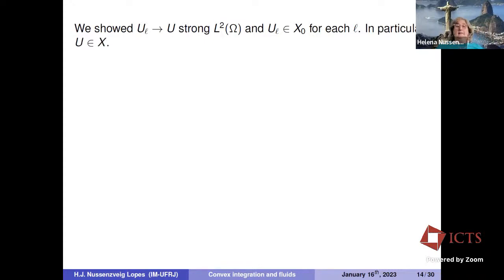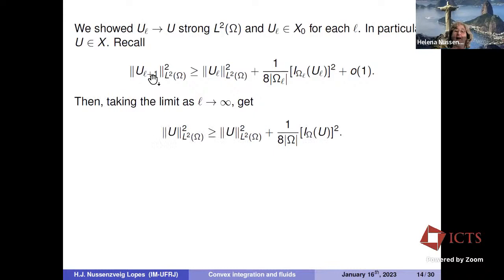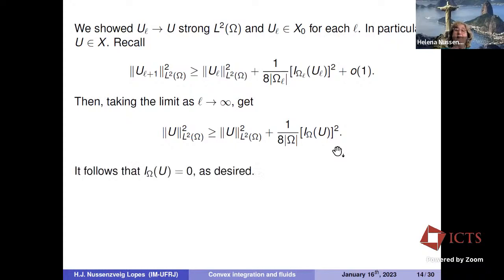The averaged-out quantities are bounded by 1/2^{L-1}, so u_L actually converges strongly to U in L² — I started with weak convergence and now get strong convergence because of my choice of scales eta_L. This follows by an epsilon/3 argument. Since u_L converges strongly to U in L² and each u_L belongs to X-naught, U belongs to X. Once U is in X, its norm is at most one and it is divergence-free. Taking the limit as L goes to infinity in the energy estimate, since omega_L converges to omega in size and applying dominated convergence, I get I_omega(U) = 0, which is what we wanted.